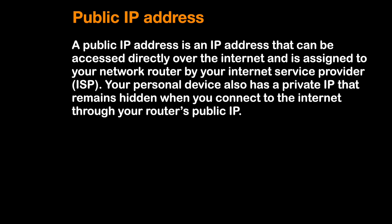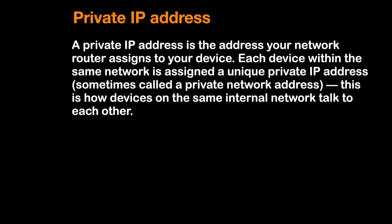All of our home devices have a private IP address. A private IP address is the address our network router assigns to our devices. Each device within the same network is assigned a unique IP address. Sometimes we call it a private network — this is how devices on the same internal network talk to each other.